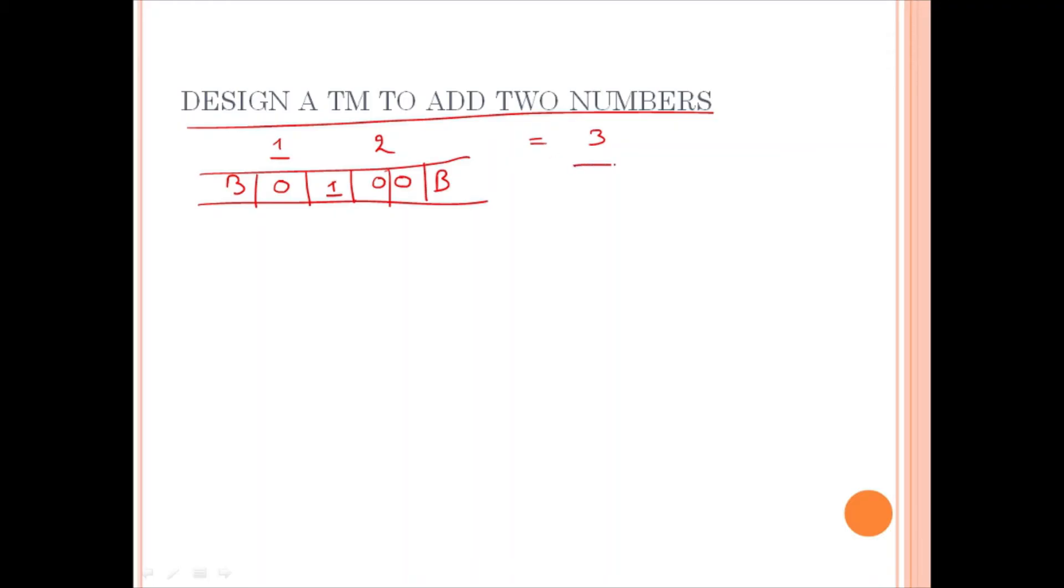Now, what should be the result? Result should be like this. 0, 0, 0, blank and blank. So, we have to think in this way. So, what we have to do?